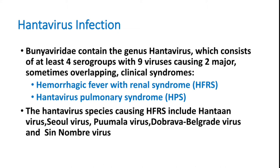Hantavirus presents with two important types of syndromes: hemorrhagic fever with renal syndrome, and hantavirus pulmonary syndrome. In hemorrhagic fever with renal syndrome, creatinine elevates and the patient develops renal failure. The other syndrome is hantavirus pulmonary syndrome, which is a very complicated problem — patients present like ARDS, similar to what we see in some dengue fever patients who have high degree fever, bleeding disorder, and ARDS-like features.